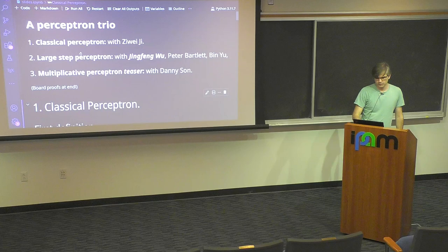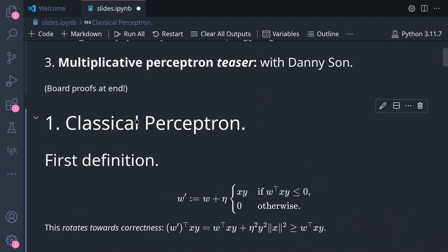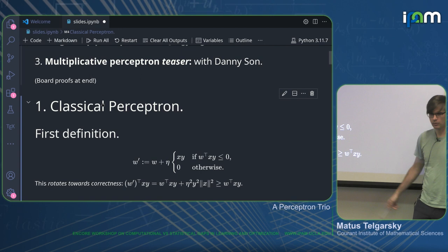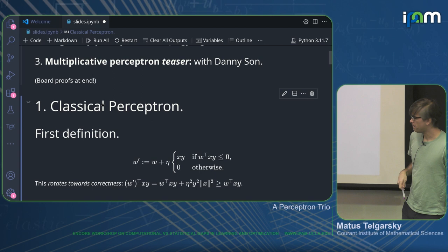Let me remind you of two ways to look at the definition of the Perceptron algorithm. It's this very clean classical algorithm from 1958 — you see a new example, and you rotate towards it if you made a mistake on it. Otherwise you do nothing. Just to be clear, when I say you're rotating towards it, if you calculate the new inner product with the example you just saw and work it out, you see that you increase this quantity because you have this squared term. So you always increase your inner product with whatever you just made a mistake with.